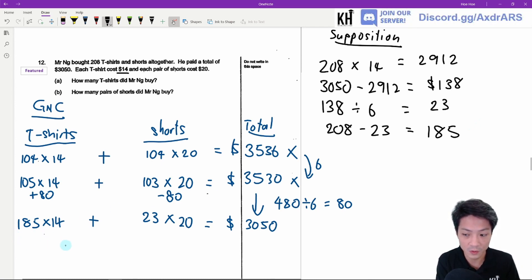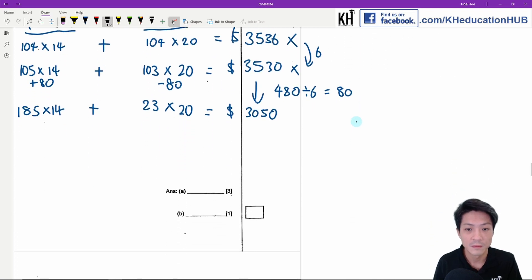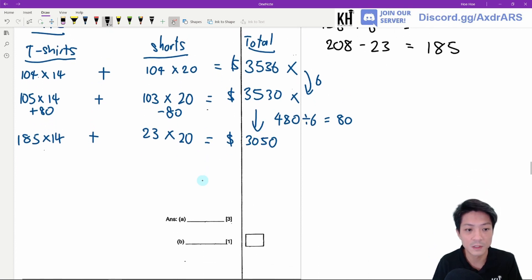So you can see that although the supposition method is a lot shorter, but you really need to understand what's going on in between the steps. If you don't understand, I actually drew a model to explain supposition in the earlier questions. So for part A, part A is the number of t-shirts, which is 185. And shorts is 23.